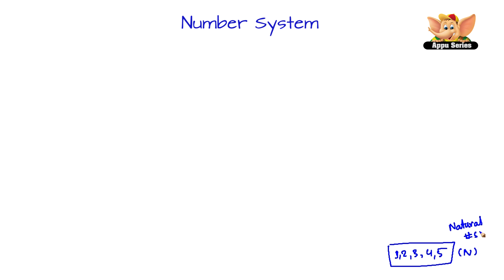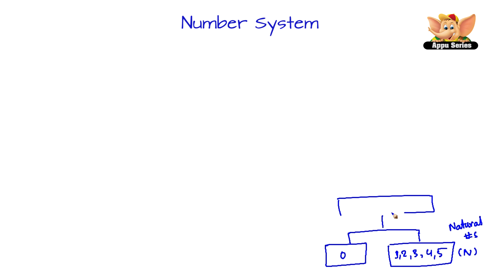We also have 0, and together 0 and natural numbers — that is 0, 1, 2, 3, 4, and so on — are called as whole numbers. Whole numbers are denoted by capital W.